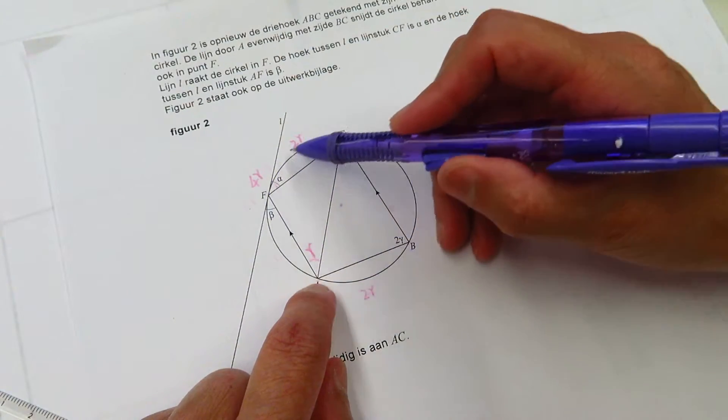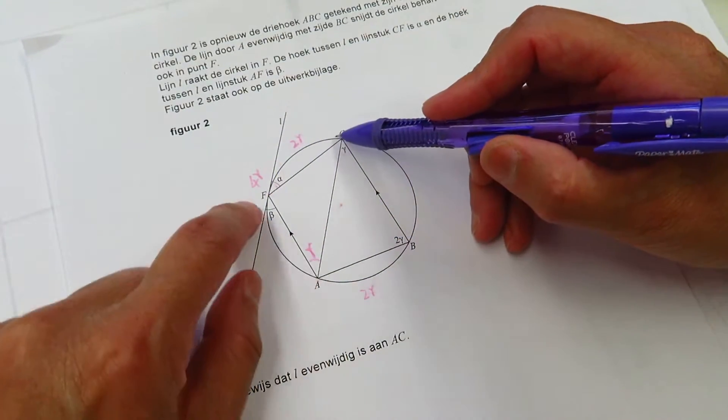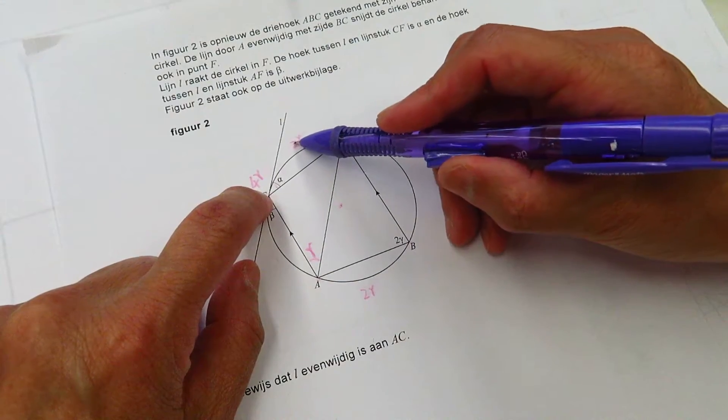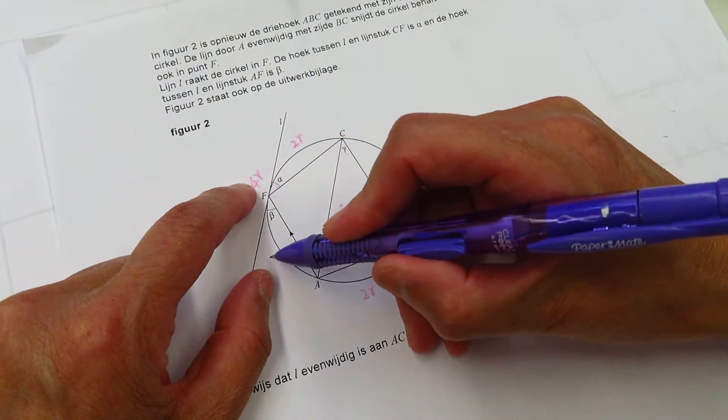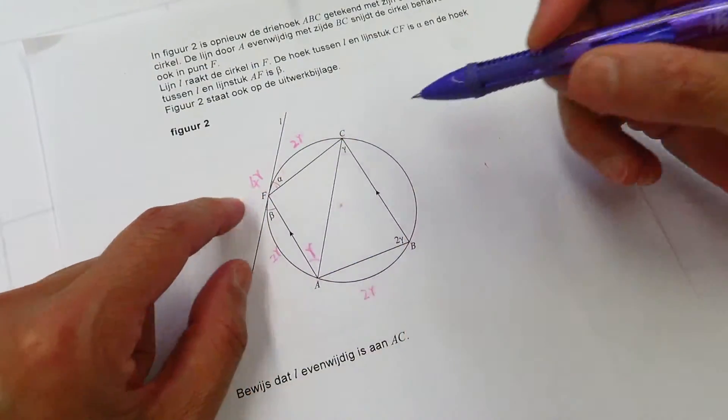The arc AFC is 4 gamma. Here we have 2 gamma. The left over is 4 minus 2 is another 2 gamma.